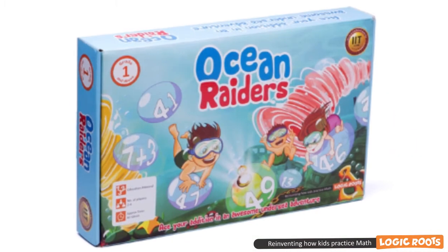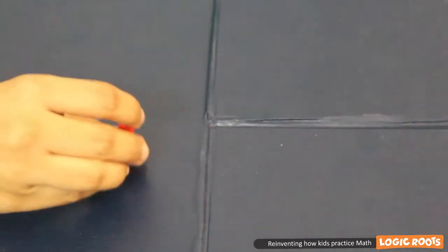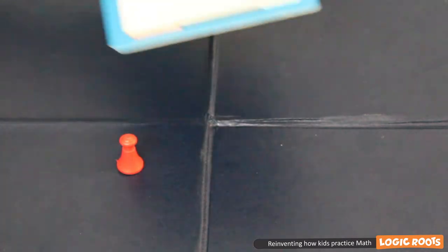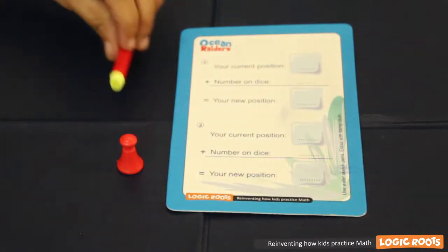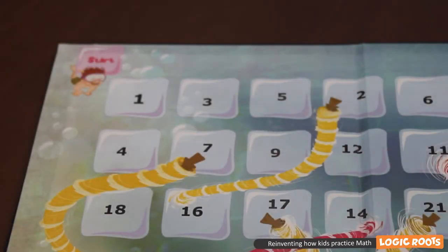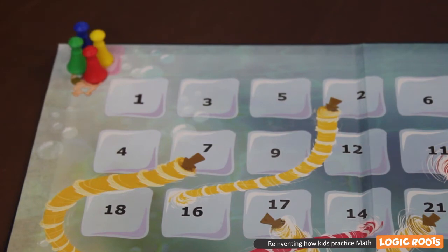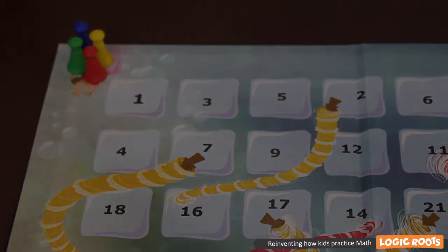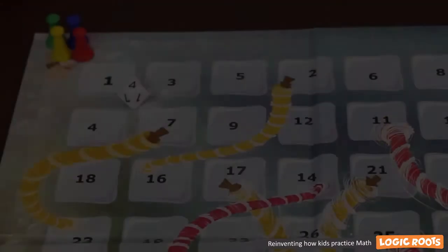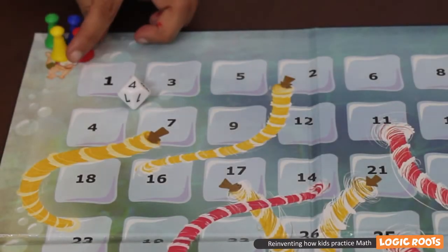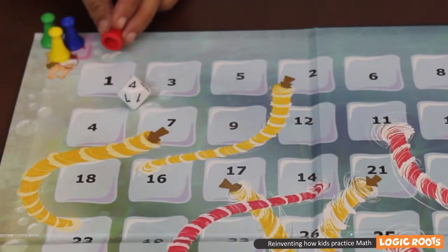Before the start of the game play, each player will get 1 diver coin, 1 logic slate, and a sketch pen. To start the game play, place all your diver coins at the start. The player with the red diver coin will make the first move by rolling the dice. Now the red diver rolled a 4.